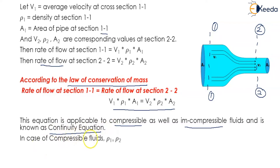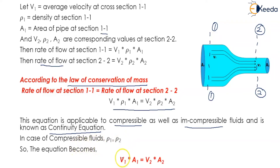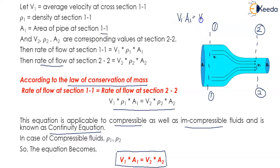In the case of incompressible fluids, the density remains the same — that is, rho1 equals rho2 — and the equation becomes v1 times A1 equals v2 times A2, which is the equation from the previous slide. Since discharge Q equals area times velocity, the above equation becomes Q1 must equal Q2.